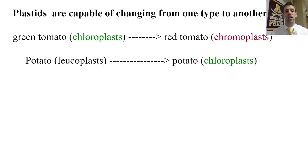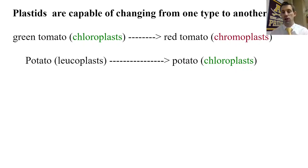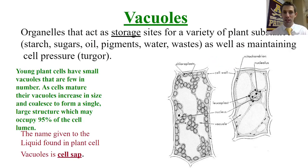Another plastid conversion you can see is leukoplasts turning into chloroplasts. If you've left a potato out on the counter too long, it starts to develop buds and can also turn green — that's the process of converting leukoplasts (which store starch) into chloroplasts. By the way, you should never eat green potatoes: as they go through that conversion, they can also produce toxins as byproducts.